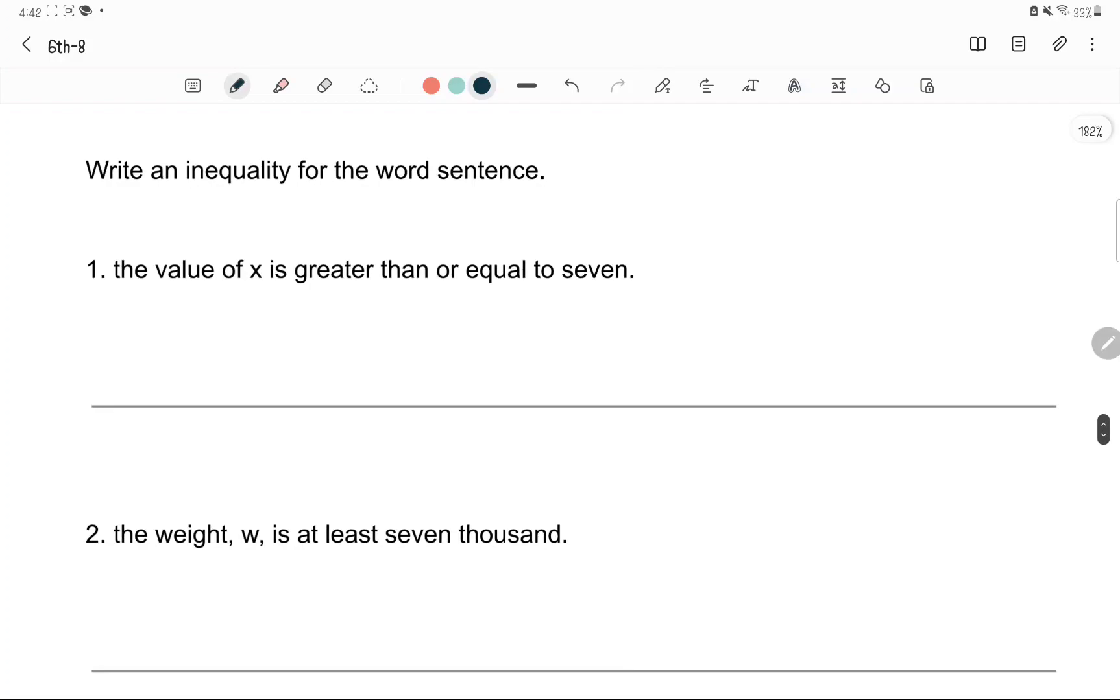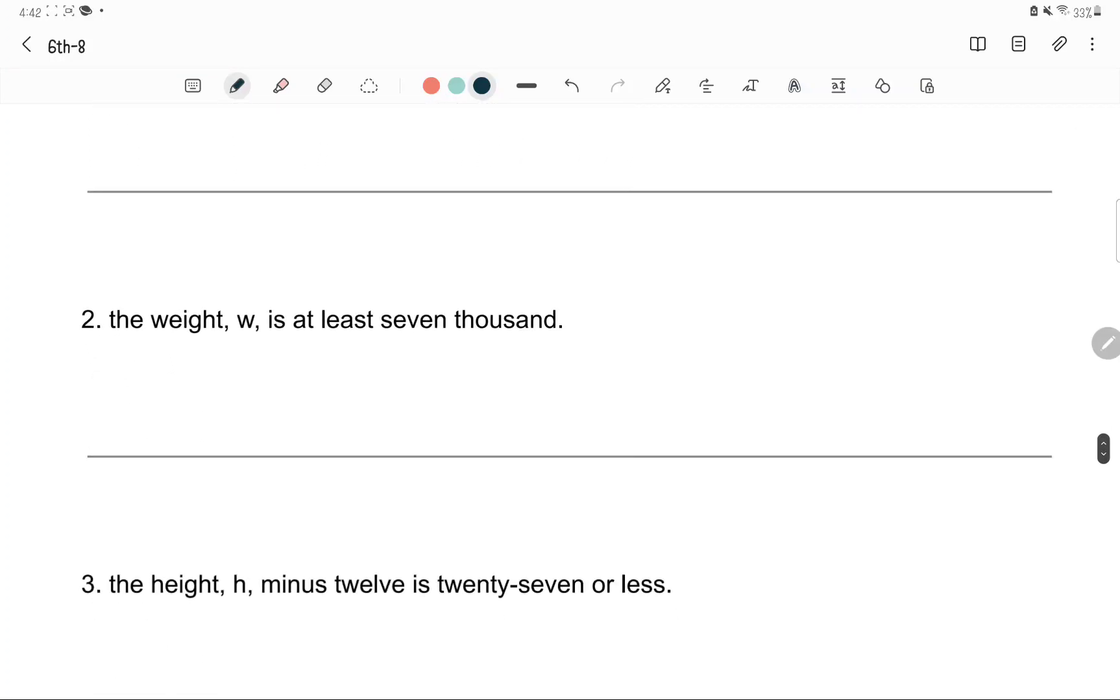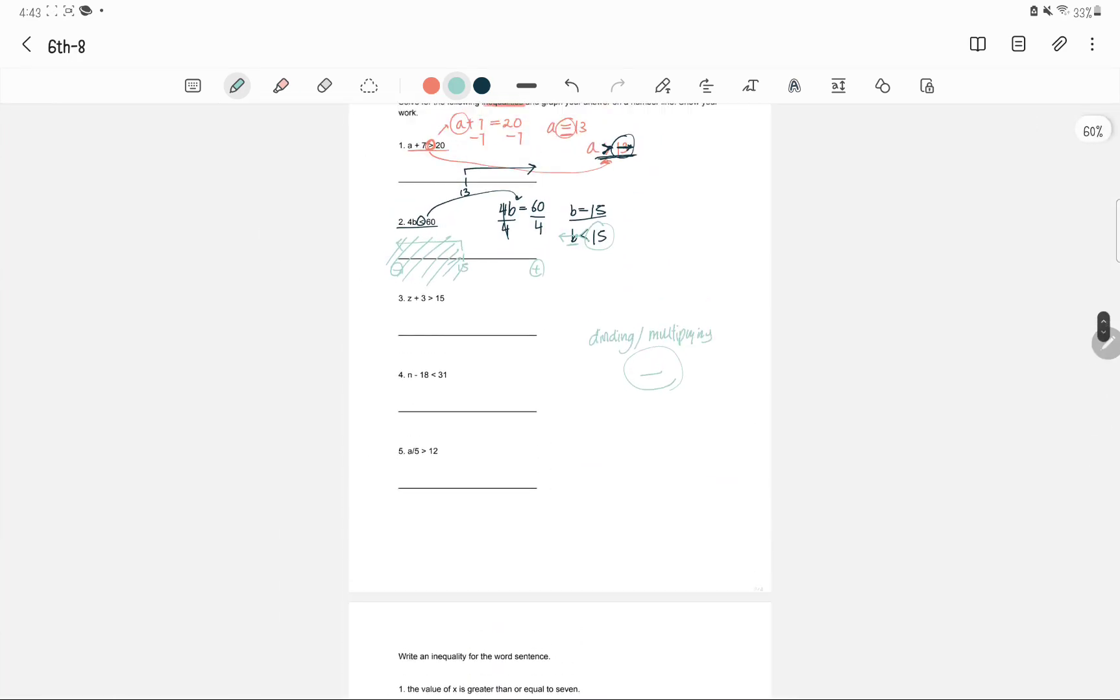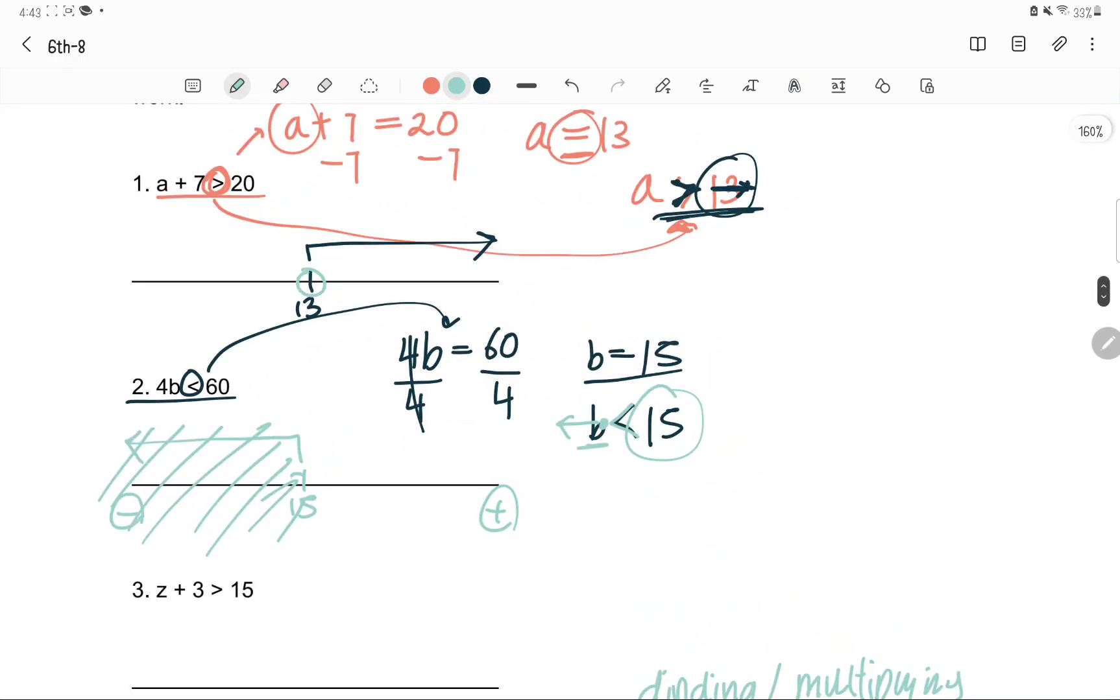I'll do just one question. The weight W is at least 7,000. At least means that W is greater than or equal to 7,000. At least shows the minimum amount that W can get. 7,000. We have this over here, 7,000. And the arrow is pointing this way, so this way, with the circle closed. And this one is open. This one is also open.